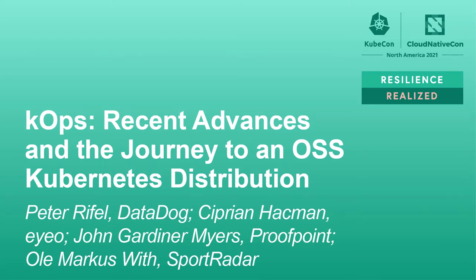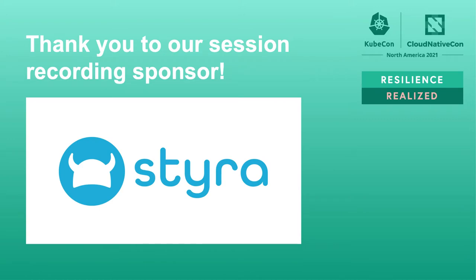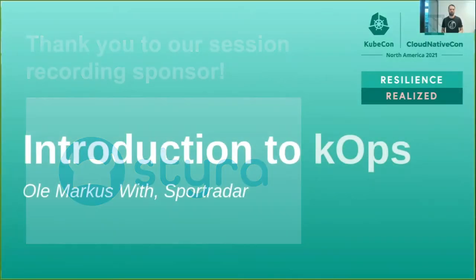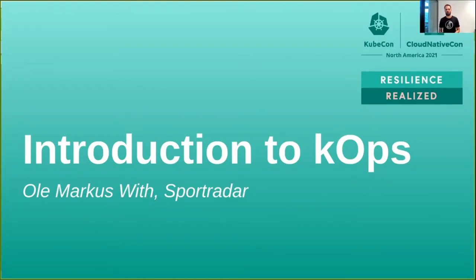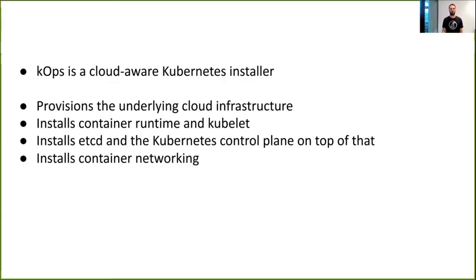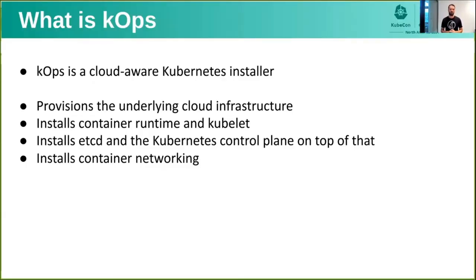Welcome to the session on kops: recent advances and the journey to an open source software Kubernetes distribution. My name is Ulo Marcus, I'm a head architect with Sport Radar. Kops is what we call a cloud-aware Kubernetes installer. It takes the cloud vendor's API, provisions instances and networking, installs a container runtime and kubelet, then installs core components like etcd and the Kubernetes control plane, and finally vital components such as container networking and DNS.